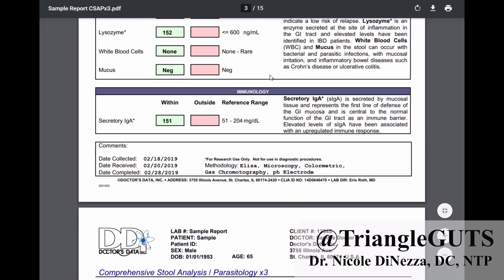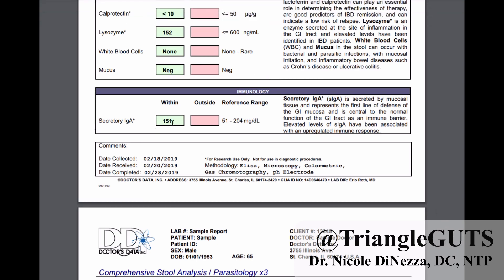Mucus and white blood cells are pretty self-explanatory. Secretory IgA is your mucosal defense. Very frequently I will see people with pretty profound dysbiosis or an infection where their secretory IgA is low — those are the cases where I'm really trying to boost secretory IgA to do some of the heavy lifting. If you have dysbiosis or an infection and elevated secretory IgA, that is entirely appropriate — your body is just trying to fight those pathogens. It doesn't mean you need to lower it; you just need to help your body get rid of the infection or dysbiosis.